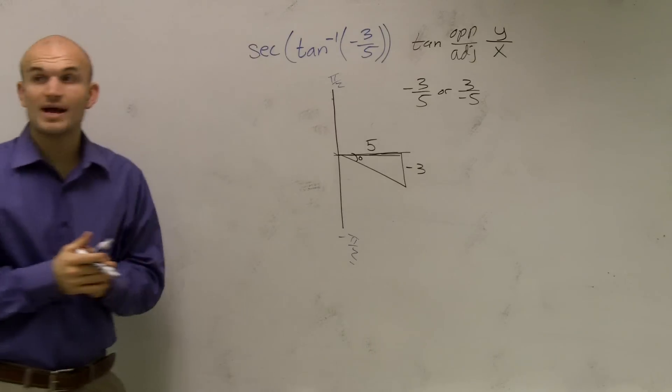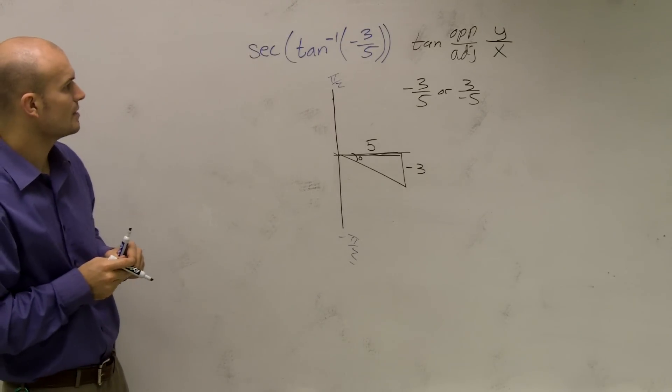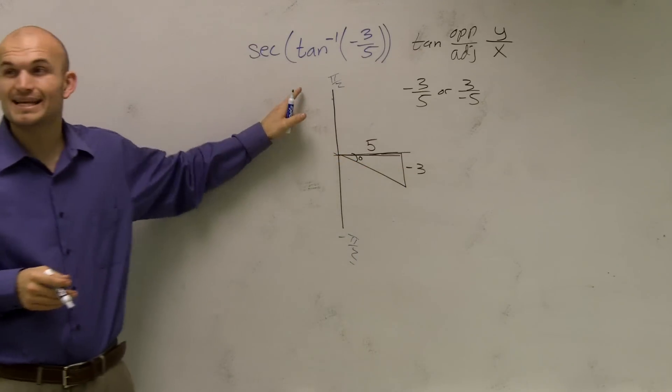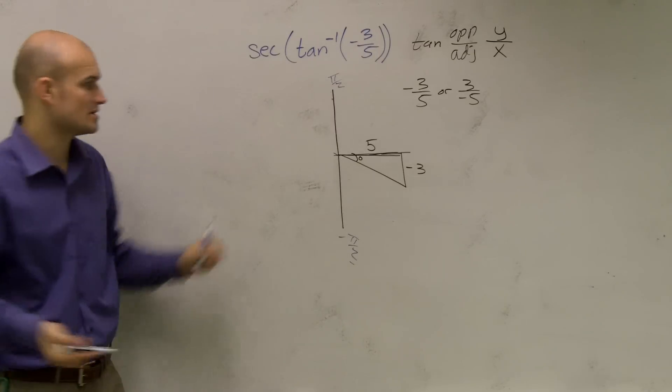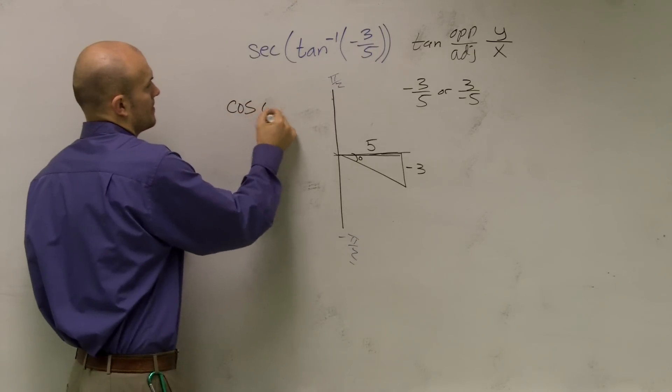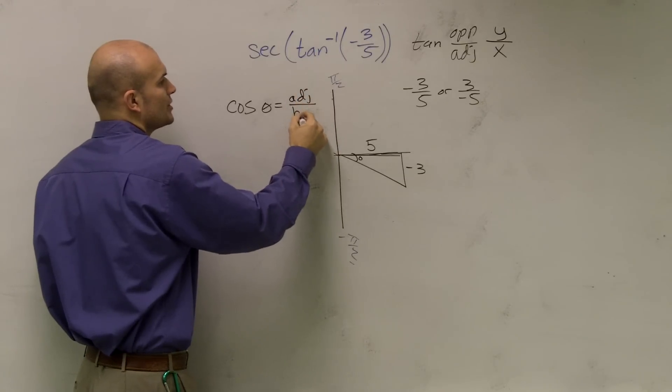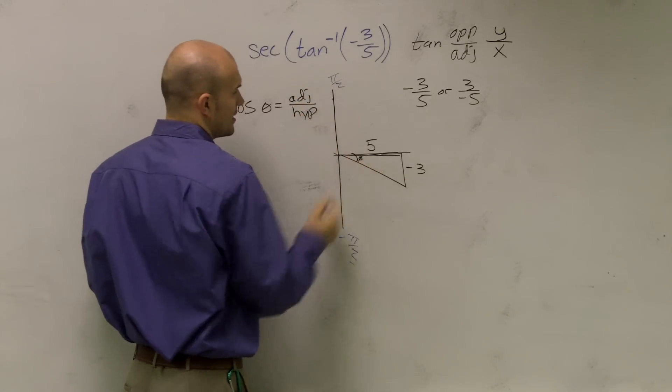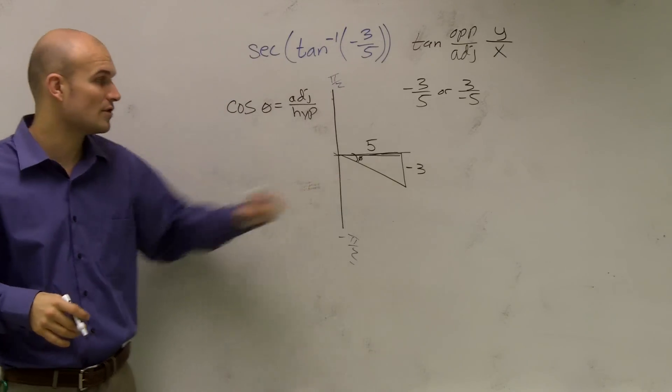And then the last thing what we need to do, actually, if we look at this, so my angle is going to be five and negative three. Secant tells me to deal with what? Secant is the inverse of cosine. Cosine of theta is going to be your adjacent over your hypotenuse. Oh, we do need to figure out the hypotenuse.